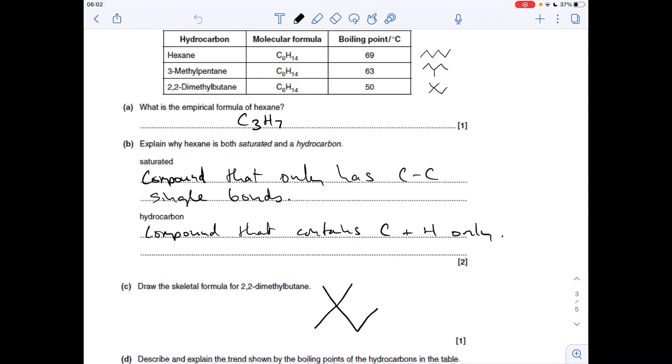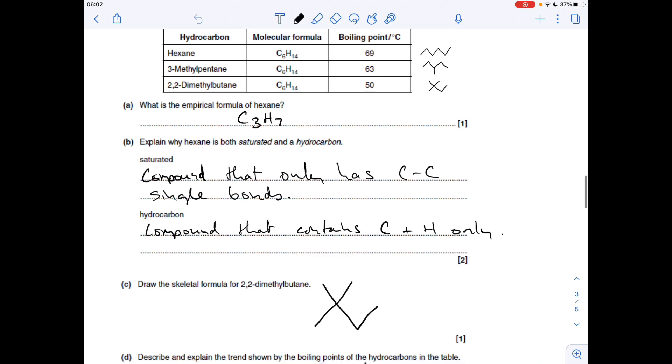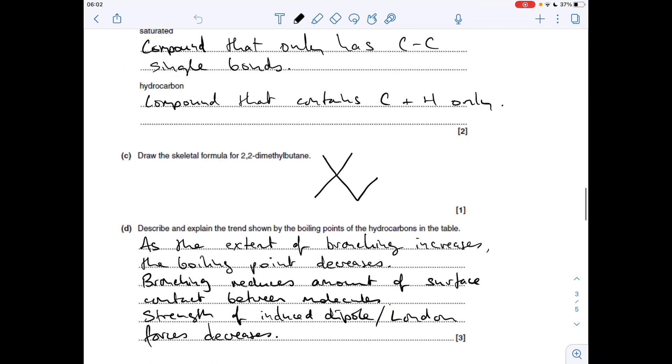You can see in hexane there's no branching. In 3-methylpentane there's that one methyl branch, and then 2,2-dimethylbutane we've got two methyl branches. You see the boiling point: as the number of branches increases, the boiling point decreases. As the extent of branching increases, the boiling point decreases. Branching reduces the amount of surface contact between the molecules, so the strength of the induced dipole or London forces will decrease.